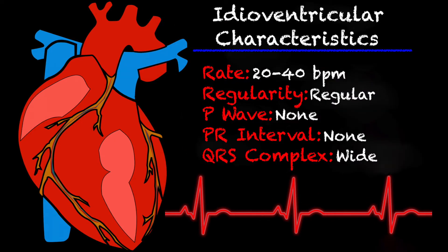Some of the characteristics of an idioventricular rhythm on a 12-lead or an EKG are a rate of 20 to 40 beats per minute. Now depending on the literature you read, you may see 15 to 40 or 20 to 50, but typically your idioventricular rhythm is going to range between 20 to 40 beats per minute. It is regular, there is no P wave, and because of that there's no PR interval, and the QRS complexes are abnormally wide.